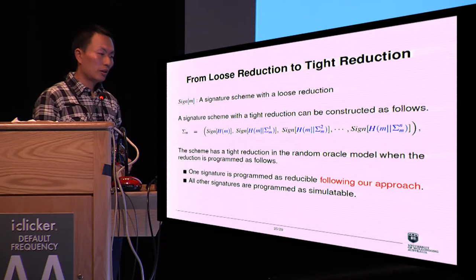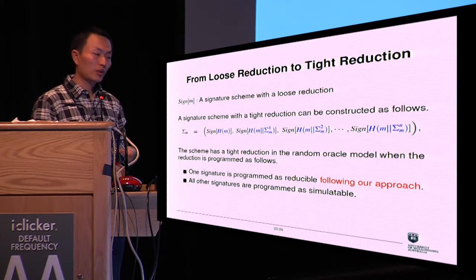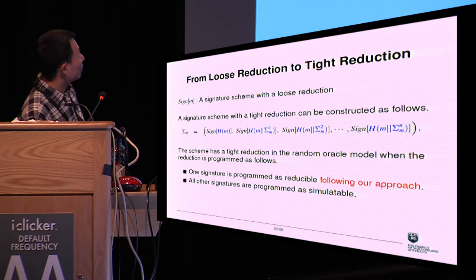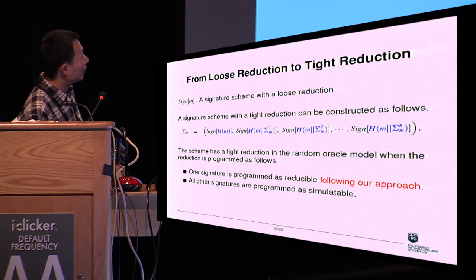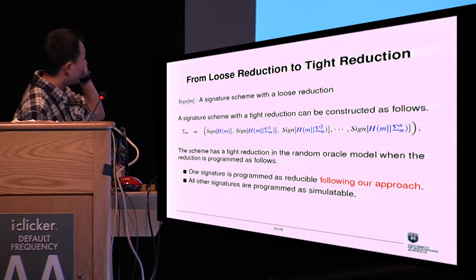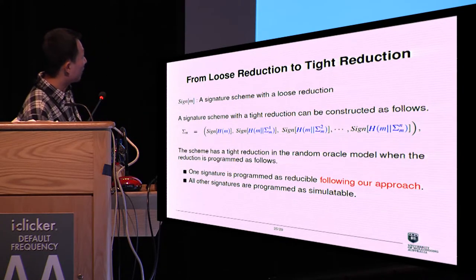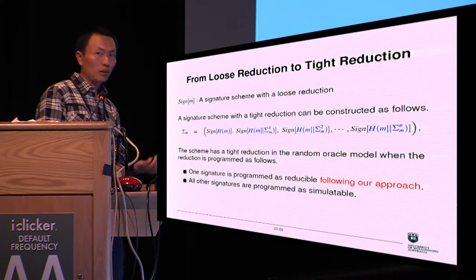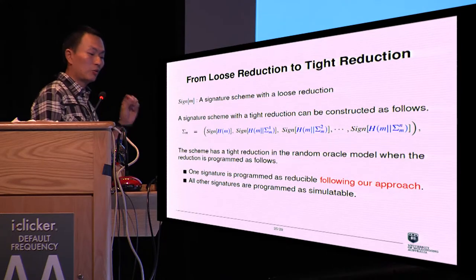This work implies a generic construction of a signature scheme. We can transform a signature scheme with a loose reduction into a signature scheme with a tight reduction. If sigma(M) is a signature with a loose reduction, we can construct a signature scheme with a tight reduction following our proposed structure, where one block signature is programmed as reducible and all other block signatures are programmed as simulatable. The condition is that this must be in the random oracle model only.